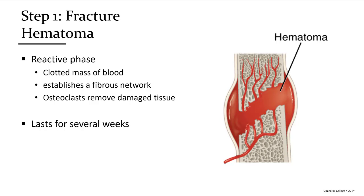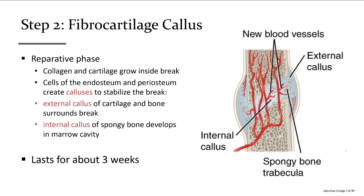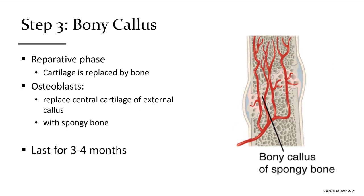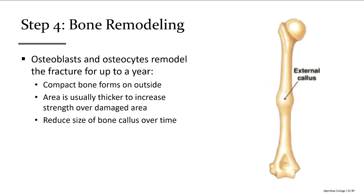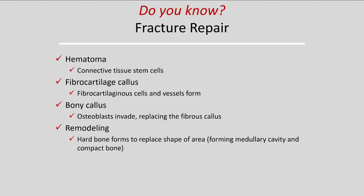Step one is hematoma formation — the reactive phase. This is a clotted mass of blood establishing a fibrous network, with osteoclasts removing damaged tissue and significant inflammation. This can last for several weeks, and it's important to have the bones set during this time. Step two is the fibrocartilage callus — the reparative phase — when collagen and cartilage grow within the break. The cells of the endosteum and periosteum work together to create a large bony callus, both external and internal. This lasts about three more weeks. Step three is the bony callus phase, where osteoblasts replace the central cartilage with spongy bone over several months. Step four is bone remodeling, where osteoblasts and osteocytes remodel the bone for up to a year, gradually reducing the thicker bony callus that overcompensated for the weakened point.